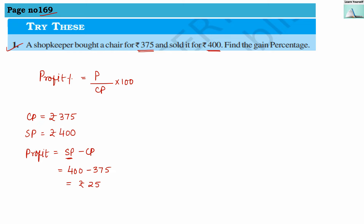This is our profit in rupees. Now, profit percentage formula is: profit percentage equals profit divided by CP, multiplied by 100. Profit percentage is what we have to find. Profit is 25, cost price is 375, multiplied by 100. Since 25 times 15 equals 375, this simplifies to 100 divided by 15.